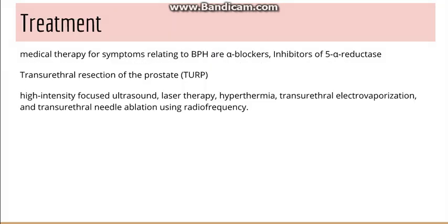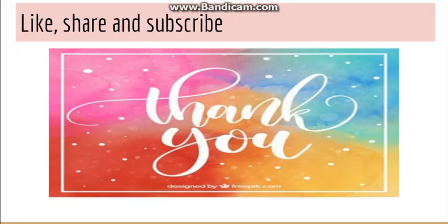Going to the treatment. The patient can be symptomatically managed. Medical therapy can be given in the form of alpha blockers or inhibitors of the 5-alpha reductase enzyme. If symptoms are more severe, the patient can undergo transurethral resection of the prostate, which is the gold standard procedure. Other procedures include laser therapy, hypothermia, and transurethral needle ablation. This was all about BPH. Do like, share, and subscribe to this channel if you like these videos. Thank you.